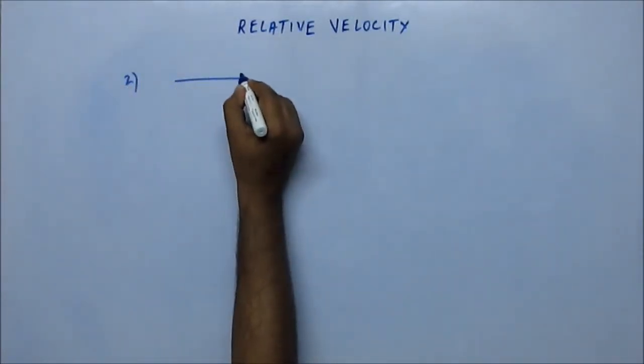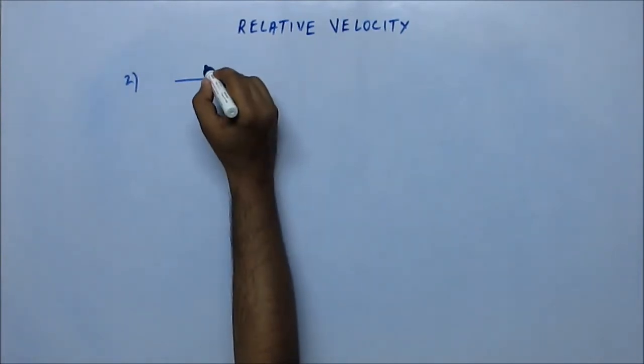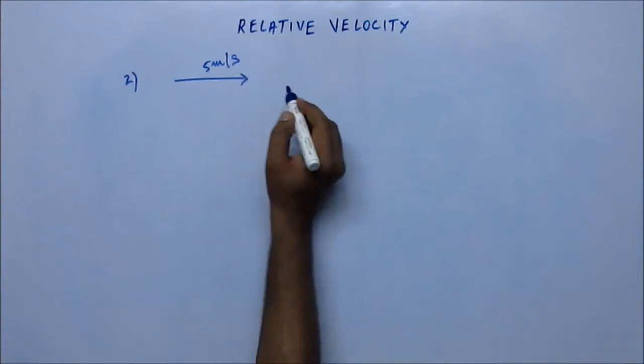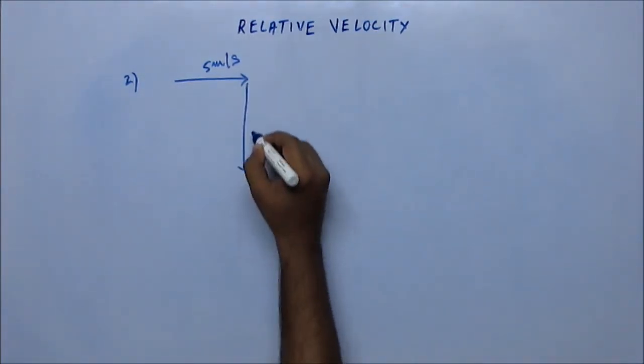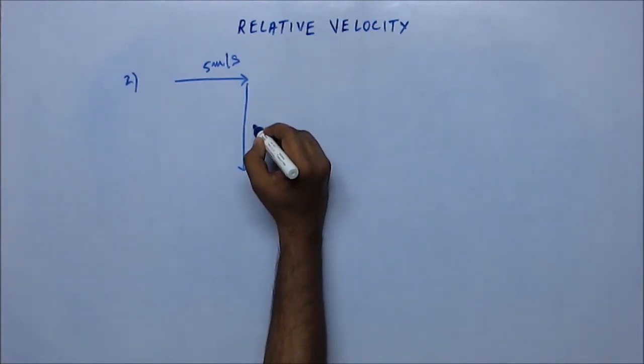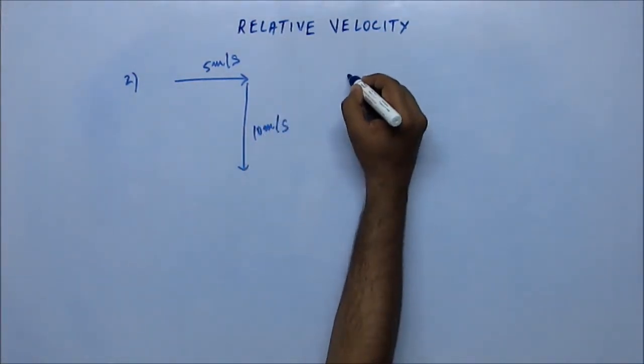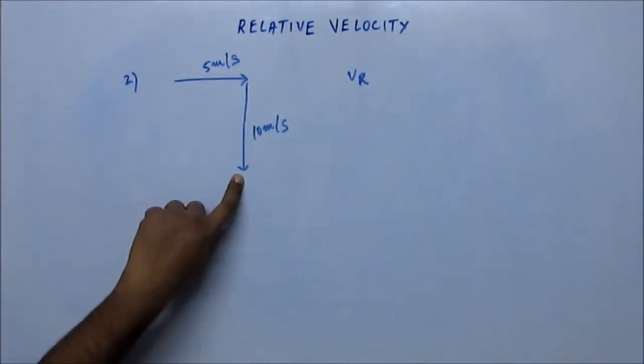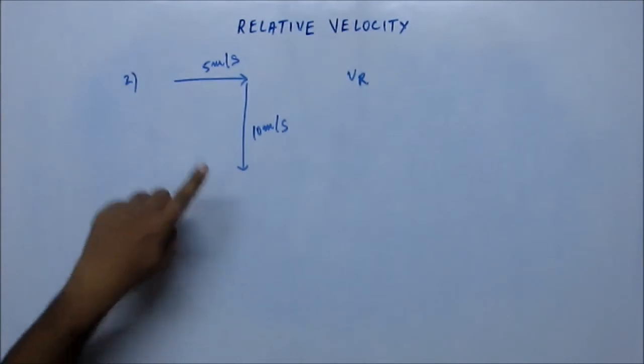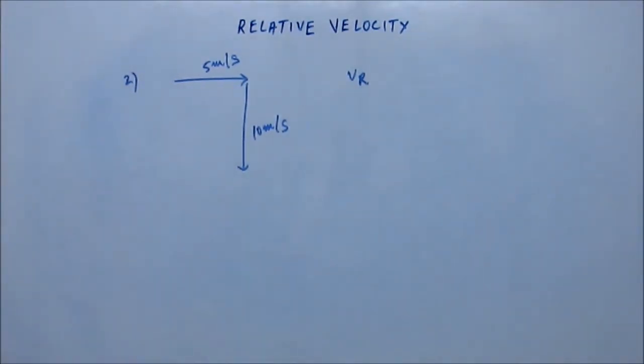This one again, oral problem. Suppose a man is moving at 5 m/s and to him the rain appears to be falling vertically downward at 10 m/s. Now the question is: what is the velocity of rain actually? This is a relative velocity of rain with respect to man and this is the velocity of man. So what is the velocity of rain?